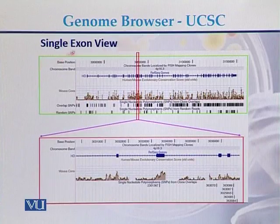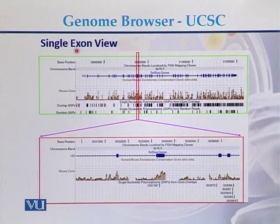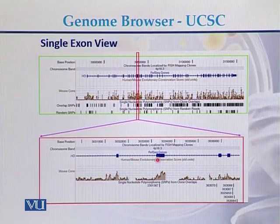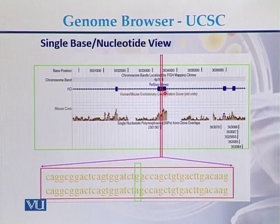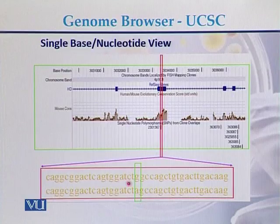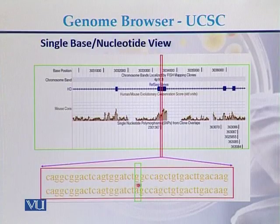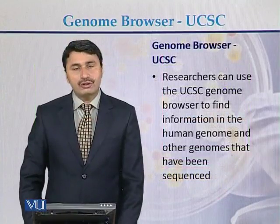If we want to see a single exon of a gene — as in the case of eukaryotic genes, which have exons and introns — a single exon can be viewed with the help of the UCSC genome browser. On the other hand, if we want to see just a single base or single nucleotide, that can also be viewed using the UCSC genome browser, where we can see the detailed DNA sequence.